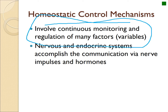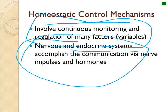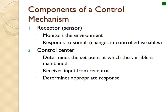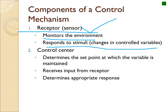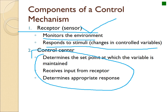Homeostatic control mechanisms involve continuous monitoring by receptors that monitor the internal and external body and communicate with each other, primarily through the nervous and endocrine systems. Receptors are like sensors — like a thermostat. They monitor temperature, pressure, chemicals sensed as smell, and vibration. Control centers take information from receptors and pass it to the emotional center — the limbic system — which helps you perceive what something is. Some people perceive the same signal as pain or pleasure.